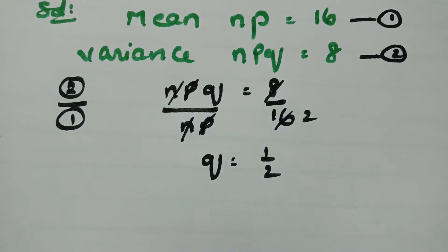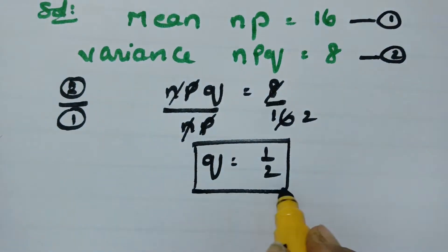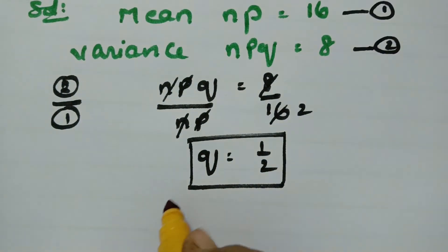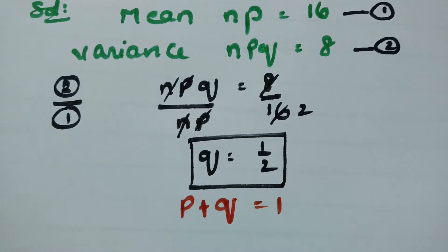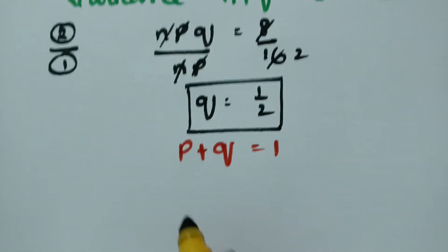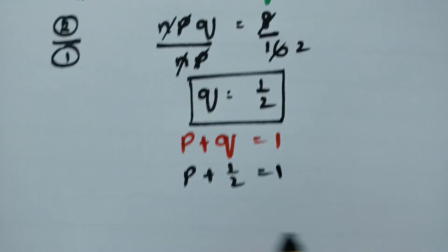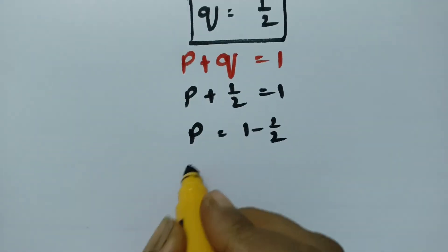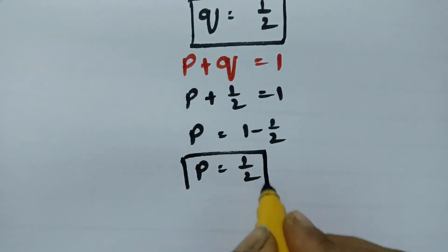After getting q equal to one-half, what about p? As you know, the total probability is always equal to 1, that is p plus q equals 1. Substituting q as one-half: p plus one-half equals 1, so p equals 1 minus one-half. Therefore p is equal to one-half.